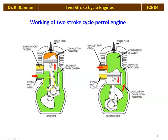In the upward stroke of the 2-stroke cycle petrol engine, the transfer port is closed, exhaust port is closed, and intake port is open. When the piston is more than 50% through the upward stroke, there is some compressed air-fuel mixture above the piston. As the piston moves upward, first the intake port opens, then the transfer port is closed and the exhaust port closes, and the air-fuel mixture at the top of the piston gets compressed in the compression chamber.